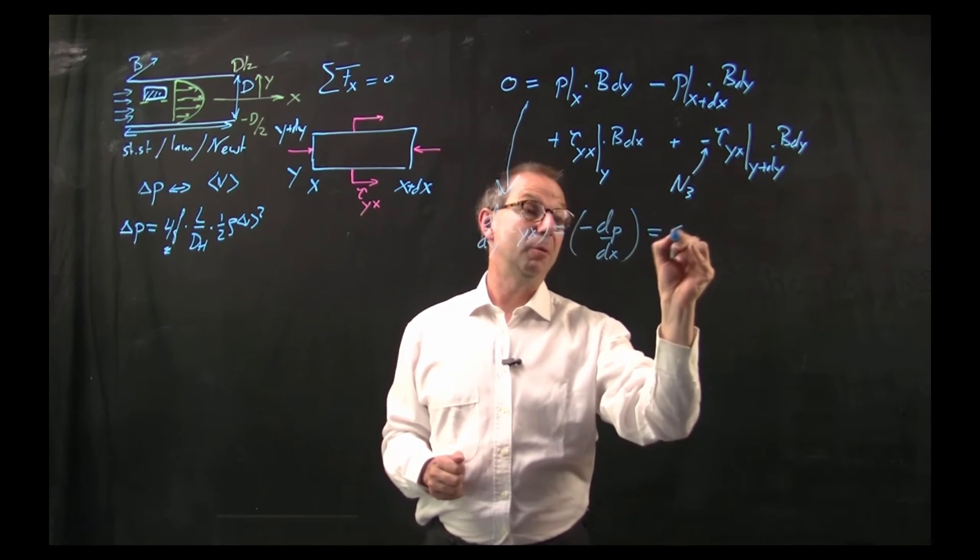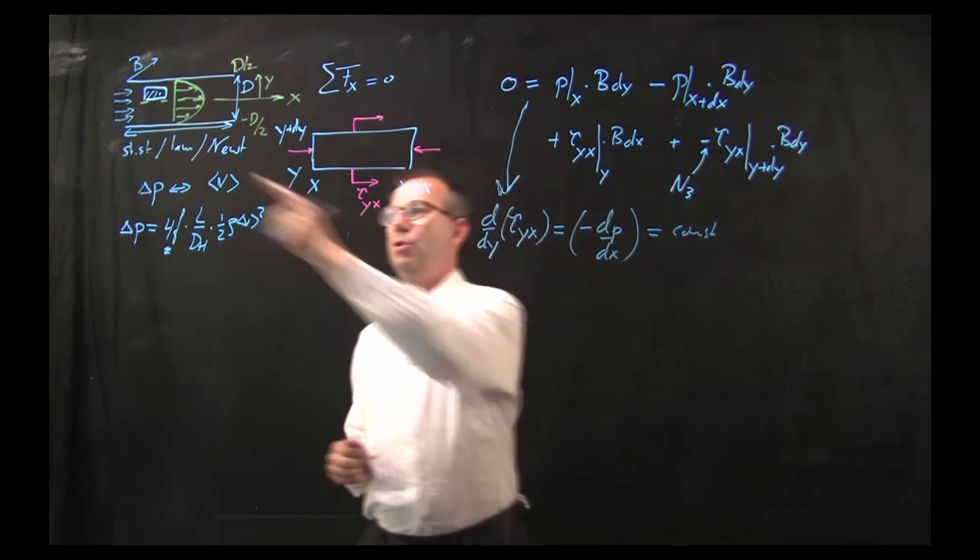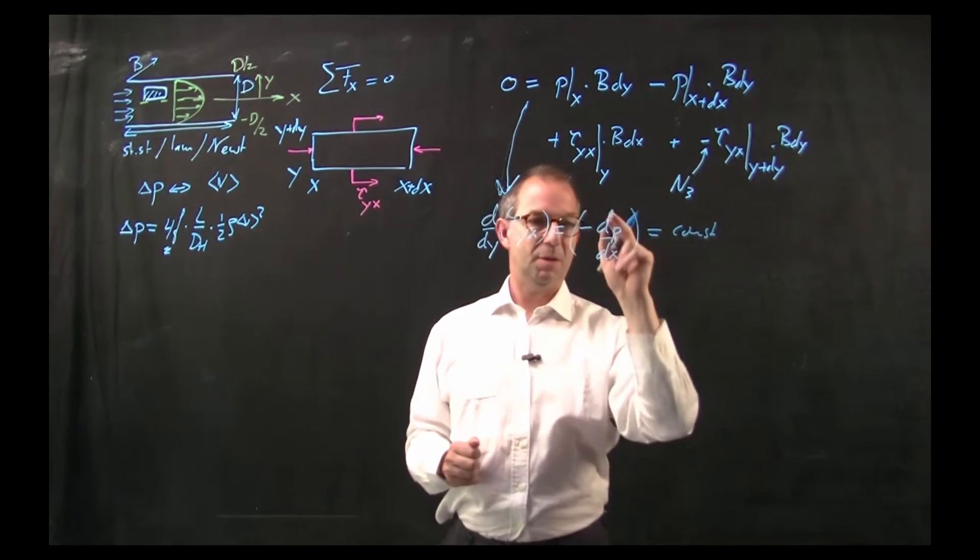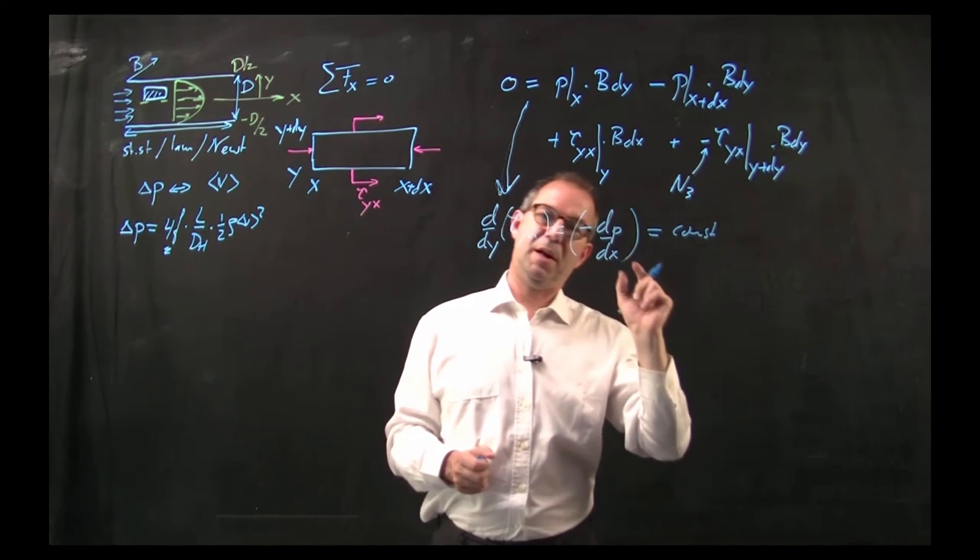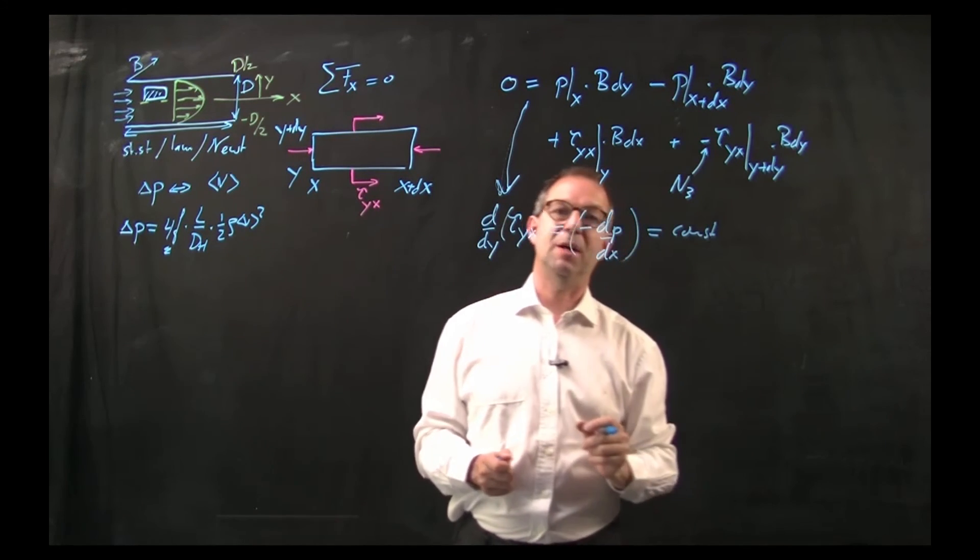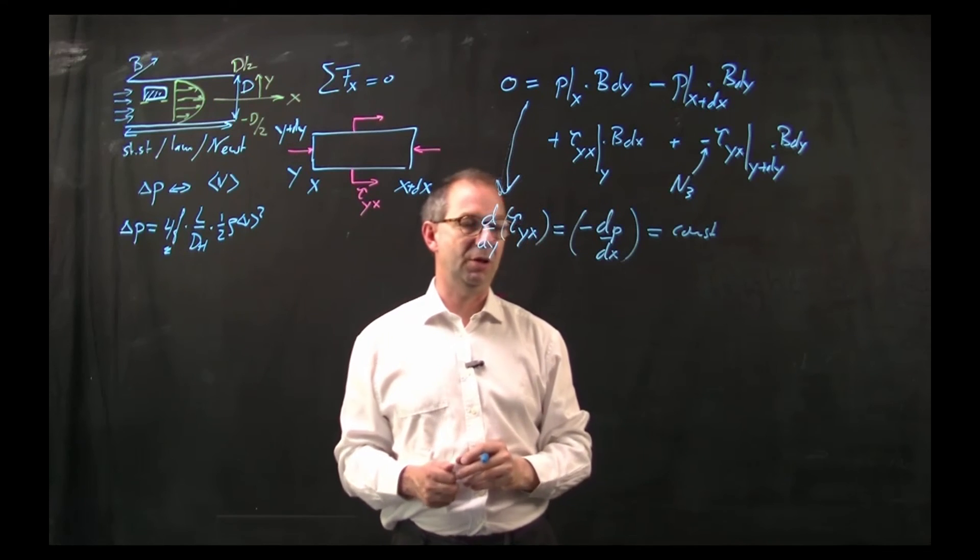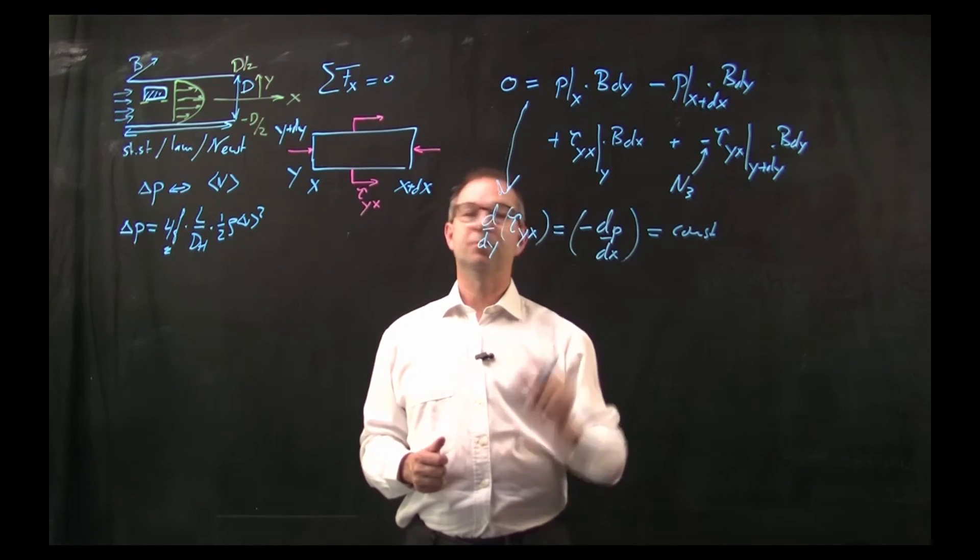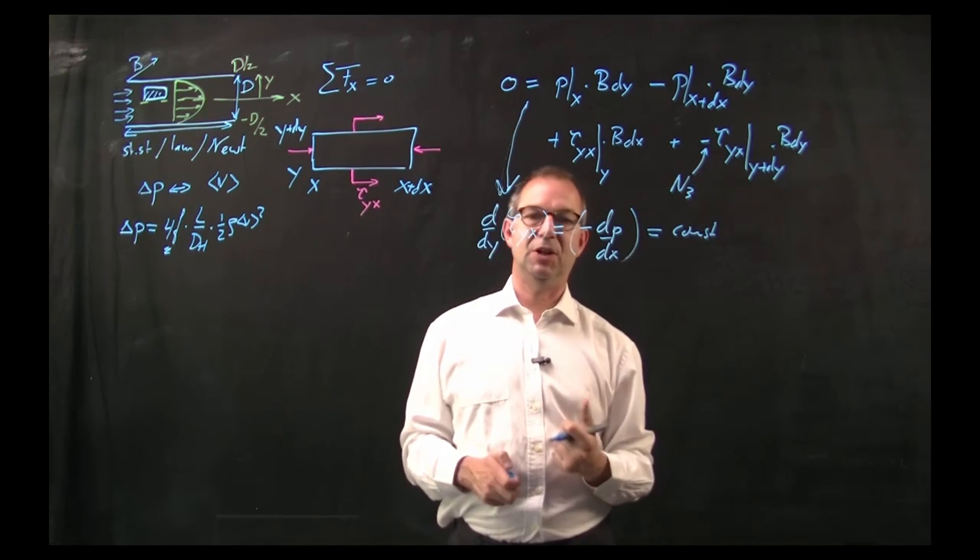Which is by the way a constant due to symmetry in this direction. The pressure may drop but it should drop everywhere at the same rate, so dp/dx is a constant. This is a positive number, dp/dx is negative in the direction x that we choose.